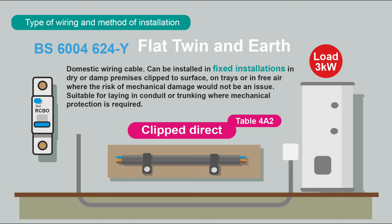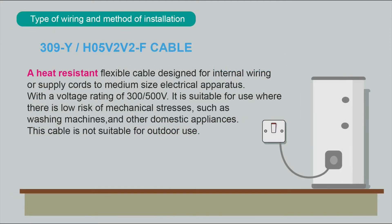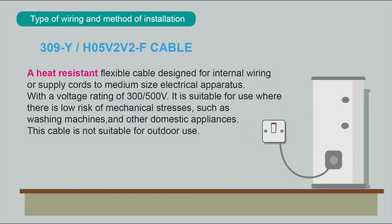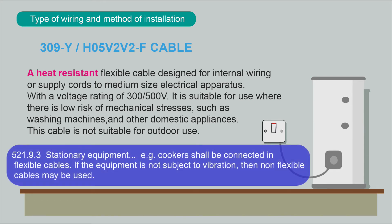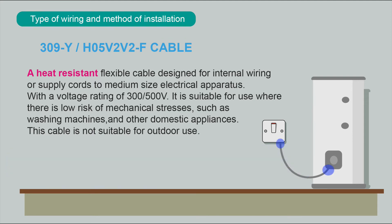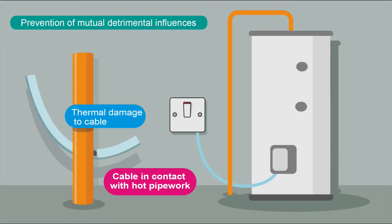There were no concerns about IP rating for the switching, so IP2X is fine. For the fixed installation, twin and earth is suitable. But for the final connection from the switch to the immersion heater, we need a flexible cable. This cable is in free air — not clipped along its full length — and especially around hot pipework, the cable has to be protected from touching it. Heat-resistant flexible cable is the obvious choice in this situation.